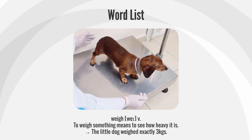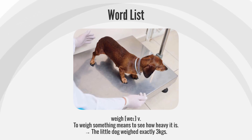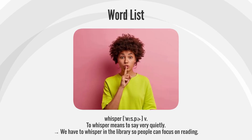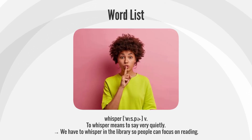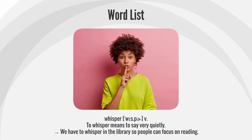Weigh — to weigh something means to see how heavy it is. Example: The little dog weighed exactly 3 kilograms. Whisper — to whisper means to say very quietly. Example: We have to whisper in the library so people can focus on reading.